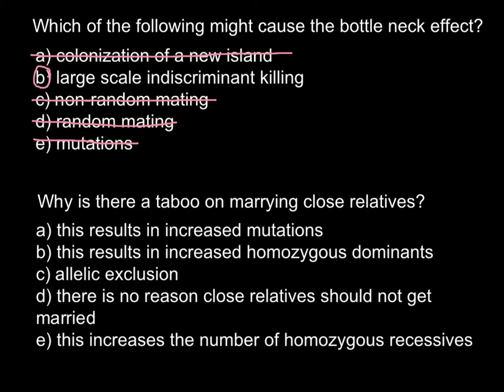The second question is: why is there a taboo on marrying close relatives? Answer A says this results in increased mutations. You probably think this is the correct answer, because as you know there are more genetic diseases in the progeny of such consanguineous matings. But in reality, marrying close relatives does not increase mutations, so this is not the correct answer.